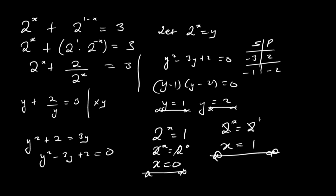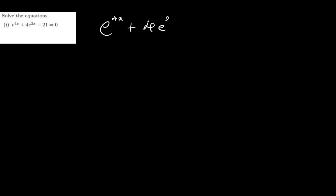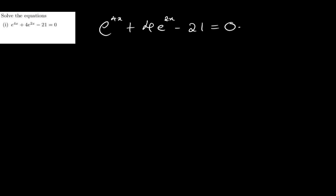So that's what I mean — when you get a negative value for y in this context, it won't work out, so just leave it and take the valid value only. Now the second question involves the same idea but uses the Euler's number e. We have e to the 4x plus 4e to the 2x minus 21 equals zero. We need to alternatively create a quadratic equation from this.